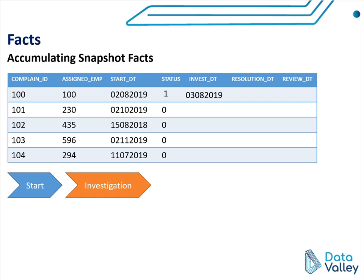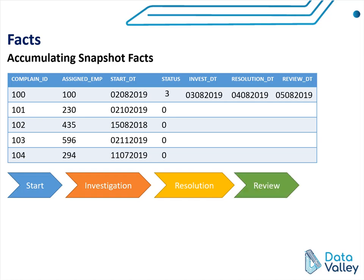Now let's say the complaint process moved from investigation stage to resolution stage. In this case, status got updated from status number one to status number two, and the resolution date has now been updated — instead of null values, we now have the date of when this process exactly entered the resolution state. The final state is the review state, where status has updated to status number three and the review date now has a value of 5th of August 2019.